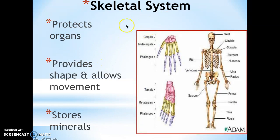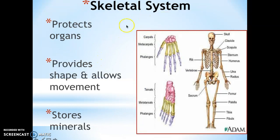The next system is the skeletal system. The skeletal system's main job is to protect the organs, provide shape and allow for movement, and to store minerals. The way that it protects your organs is through things like your ribcage, which protects your lungs and your heart. It provides shape and allows movement by allowing muscles to be attached to bones, enabling you to move all of your skeletal muscles. And it also stores minerals.